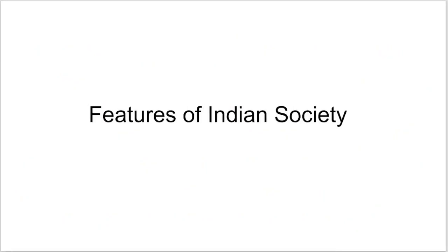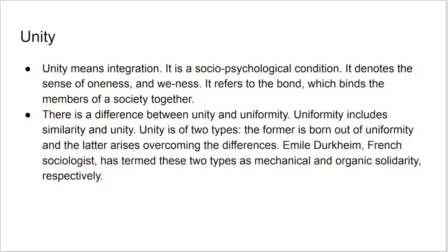Now we come to the main topic: features of Indian society, one by one. The first and most important feature of Indian society is unity. Unity means integration — living together and being together. It is a socio-psychological condition. It denotes the sense of oneness, a 'we' feeling. It refers to the bond which binds the members of society.